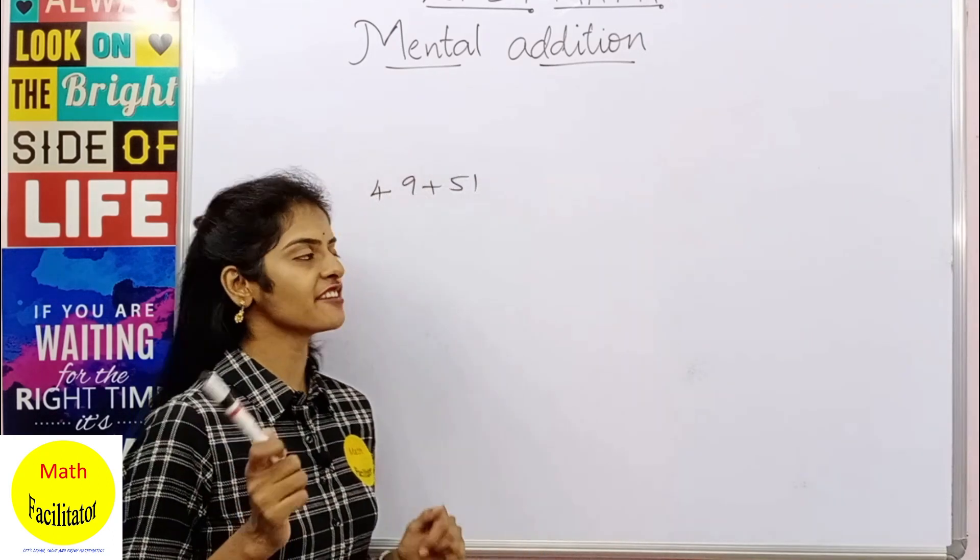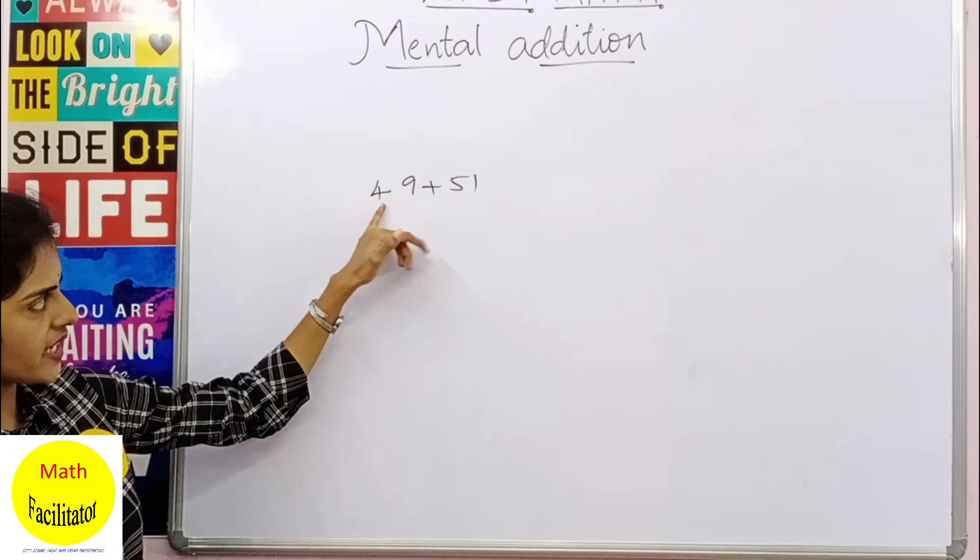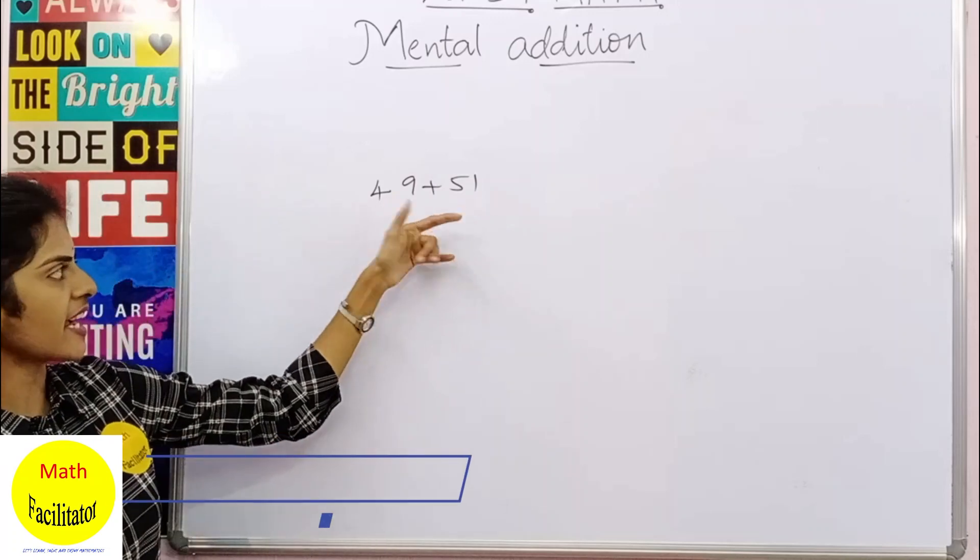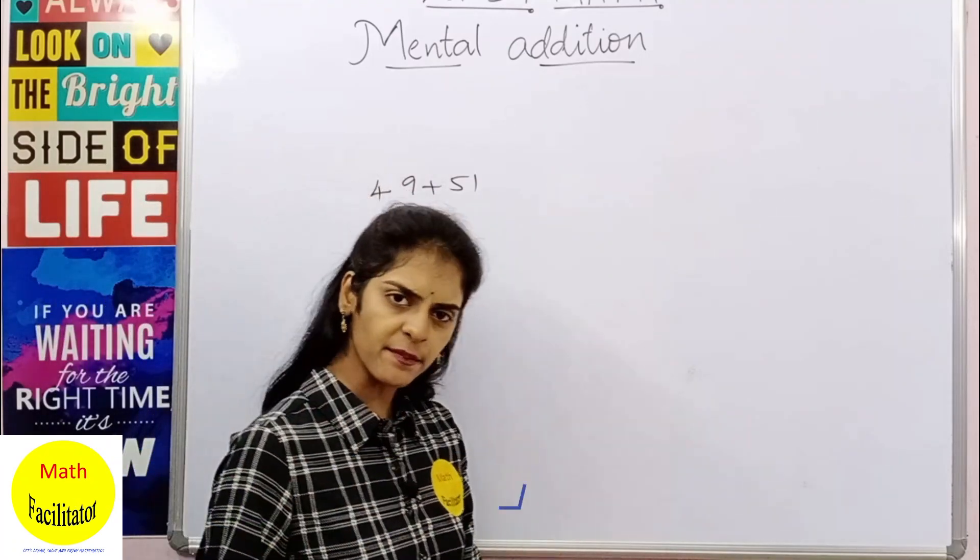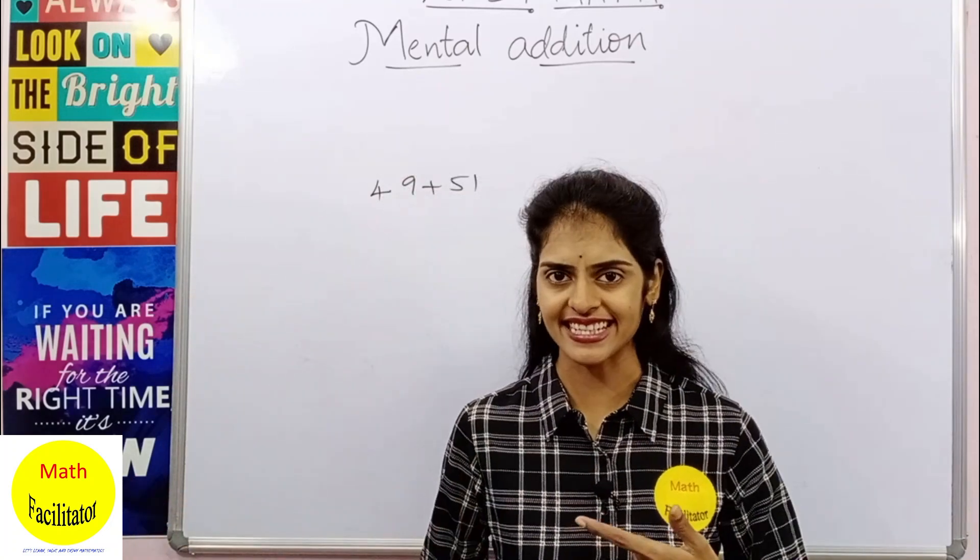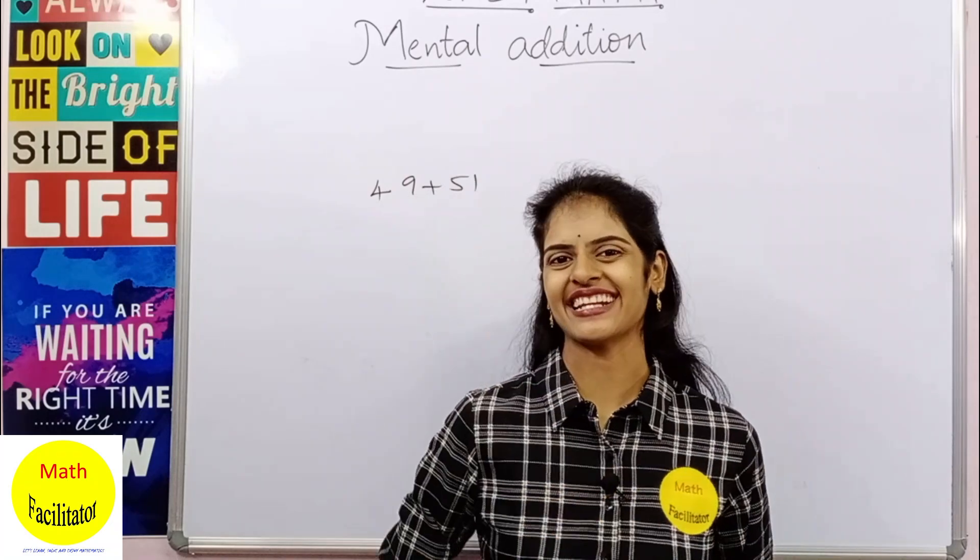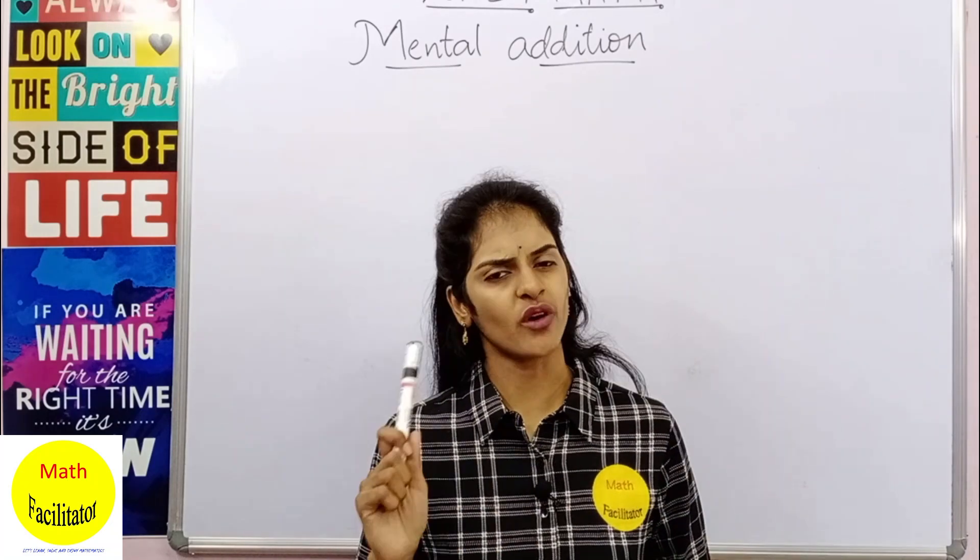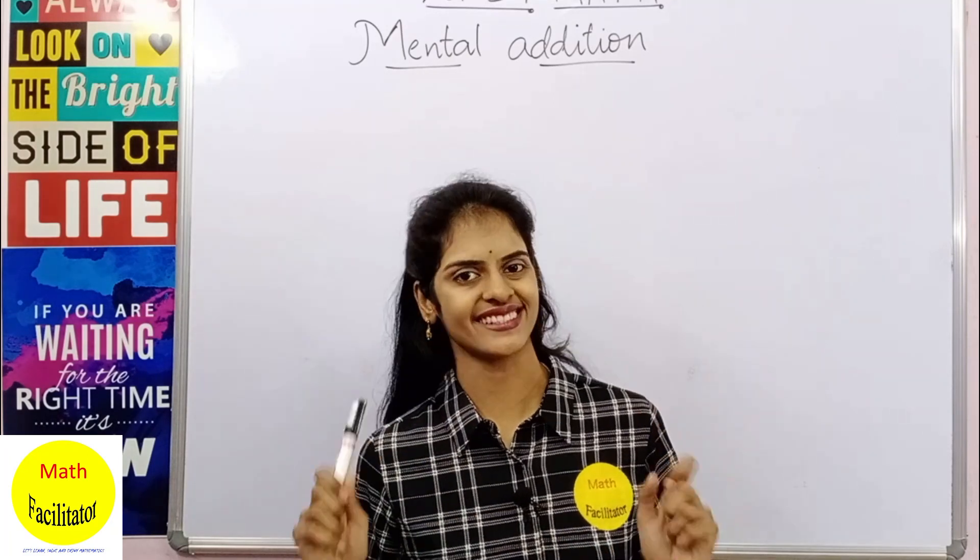Now let us add 49 and 51 orally. In 49 you have 40, so this is 40 plus 50, 90, and 9 plus 1 is 10, so 90 plus 10 is 100. So by practice, mental addition is not a rocket science. You'll get it easily and I'll provide you the worksheet to improve your mental addition. Now that was just one of the methods how you can add orally. Now let us move on to the next method.